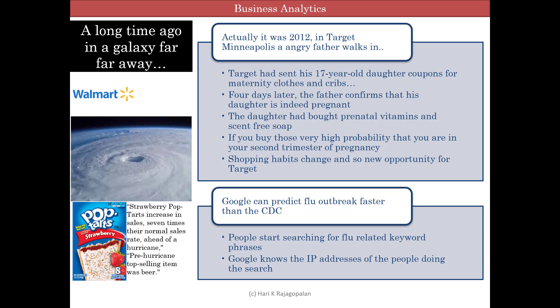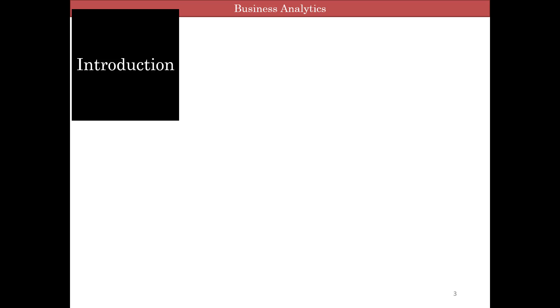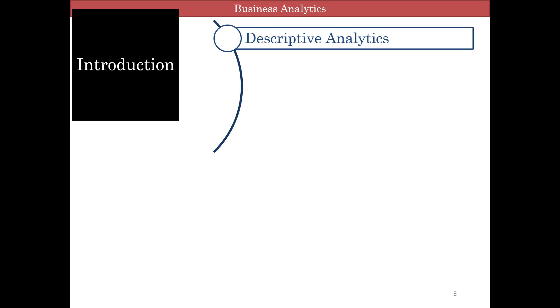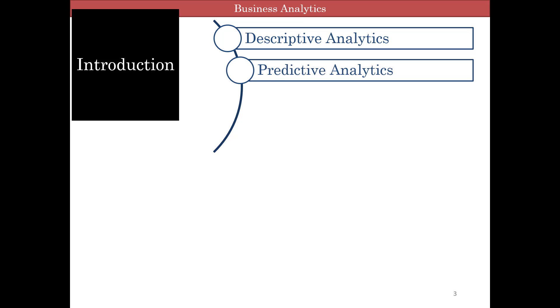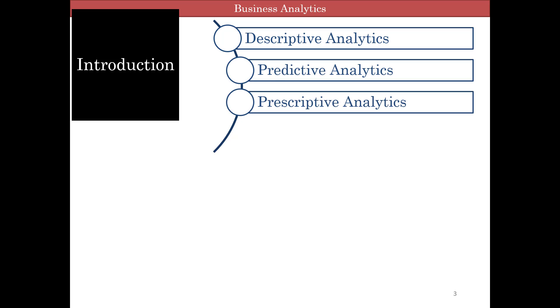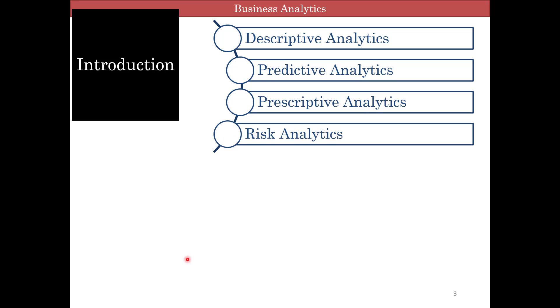So let's take a look at the different types of analytics and what analytics actually means. We are going to look at three types of analytics and a fourth one which kind of covers all three. The first is descriptive analytics, then predictive, prescriptive, and finally risk analytics. While risk analytics actually covers all other three, we are treating it separately because it introduces uncertainty and risk.